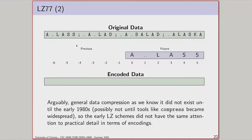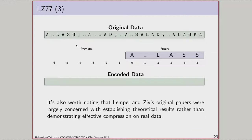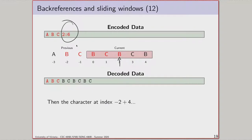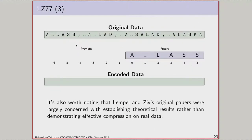LZ77 emits as its output a bunch of distance-length-literal triples. Each triple is a back reference and a literal. If you can't find a back reference, you emit a trivial one — a zero-length back reference. This means we don't get a clean set of symbols and back references; every single element of the compressed output is a combination of both. Let's use a window size of six and walk through this. For the first character A, there's nothing in output yet, so we emit a back reference of distance and length zero, followed by literal A.